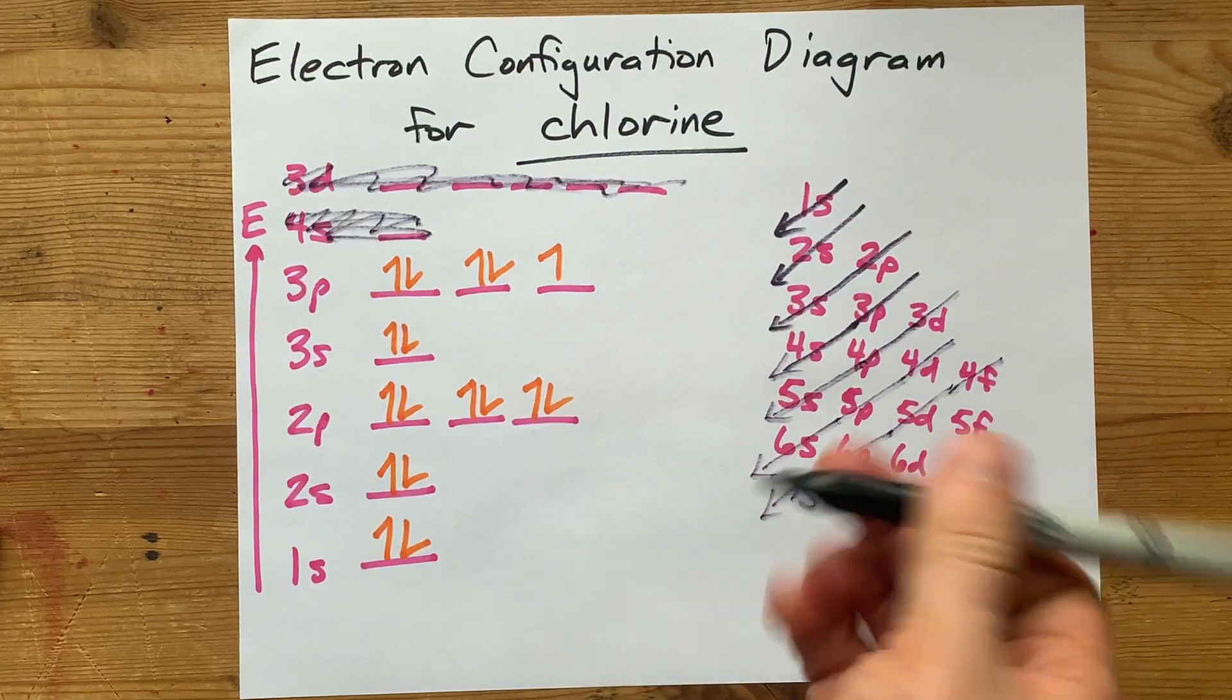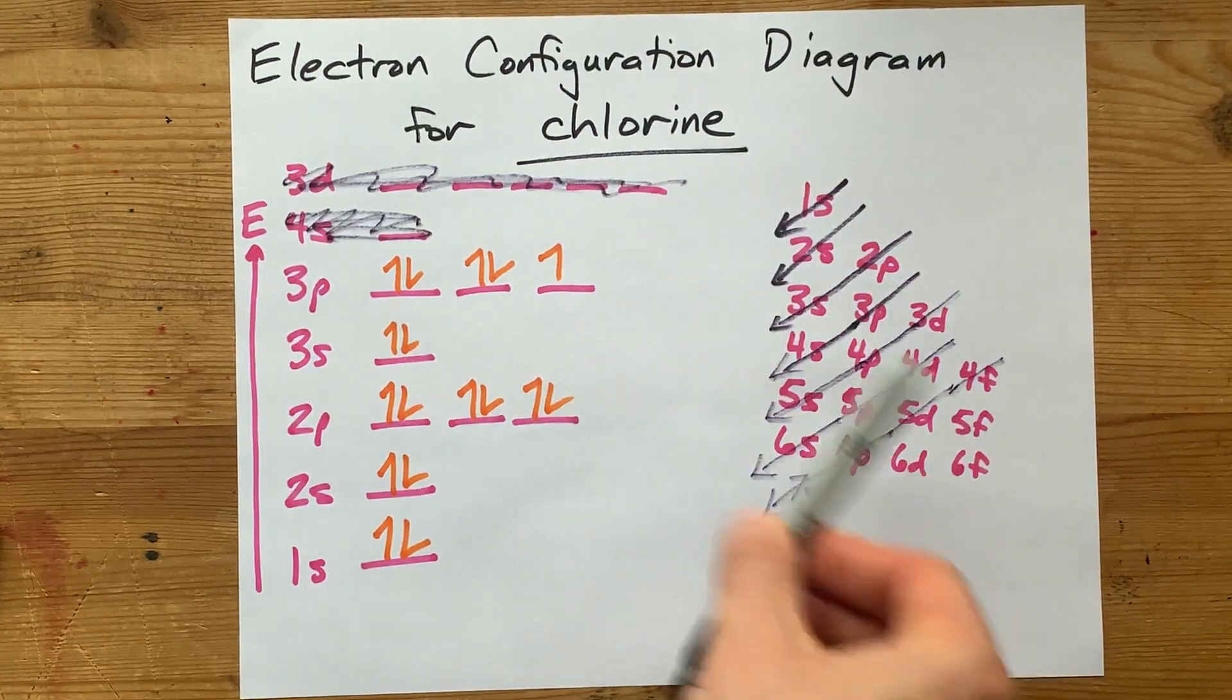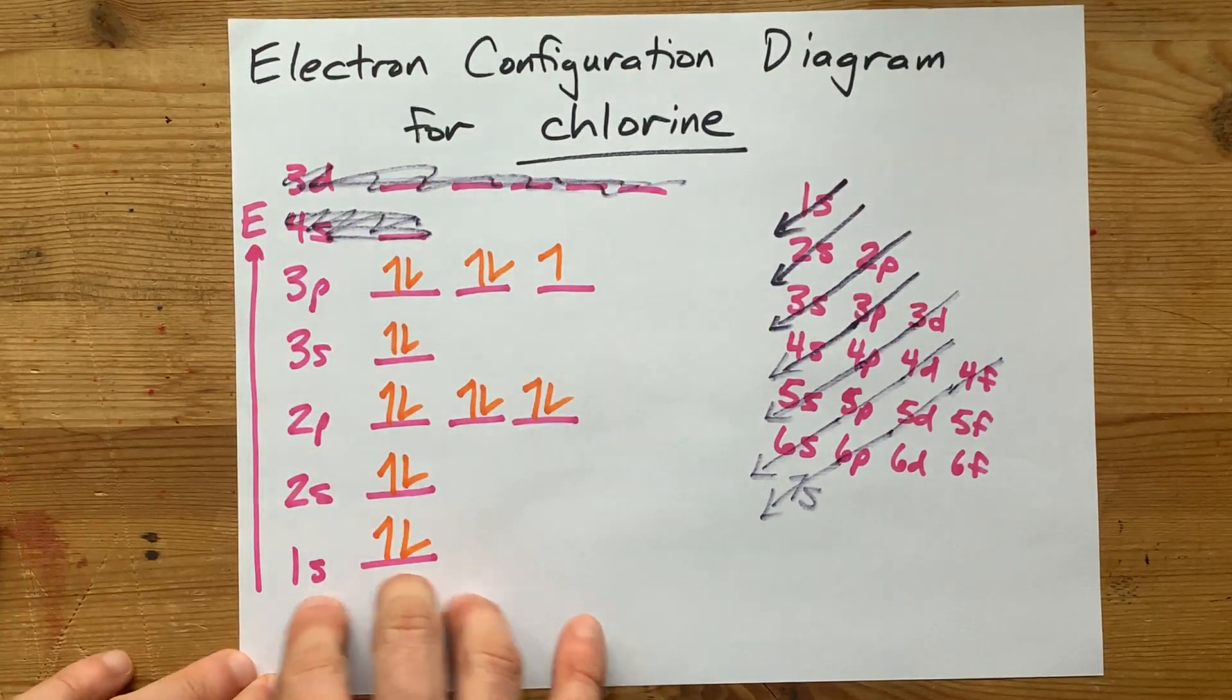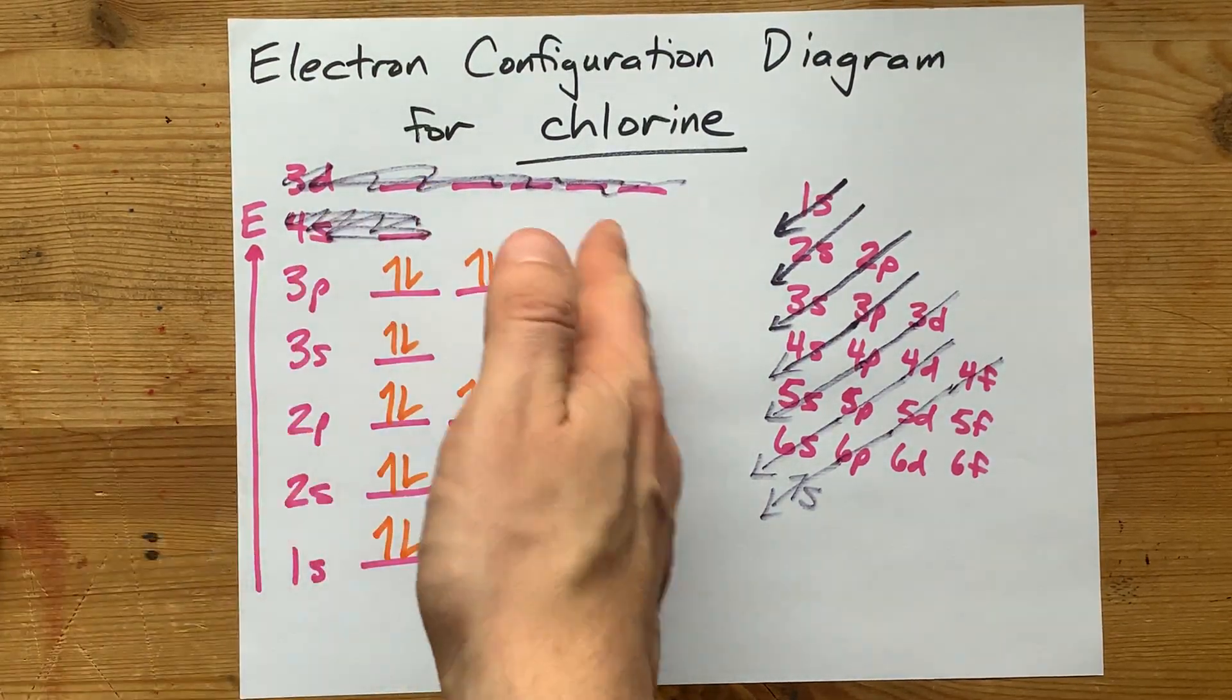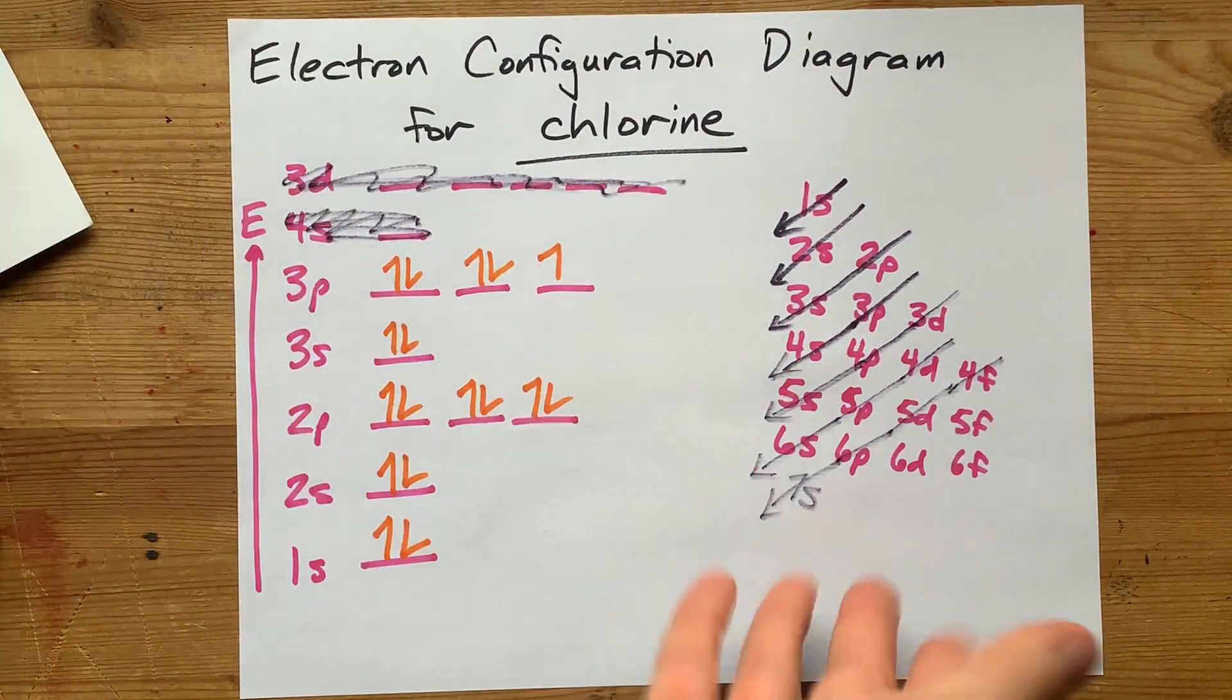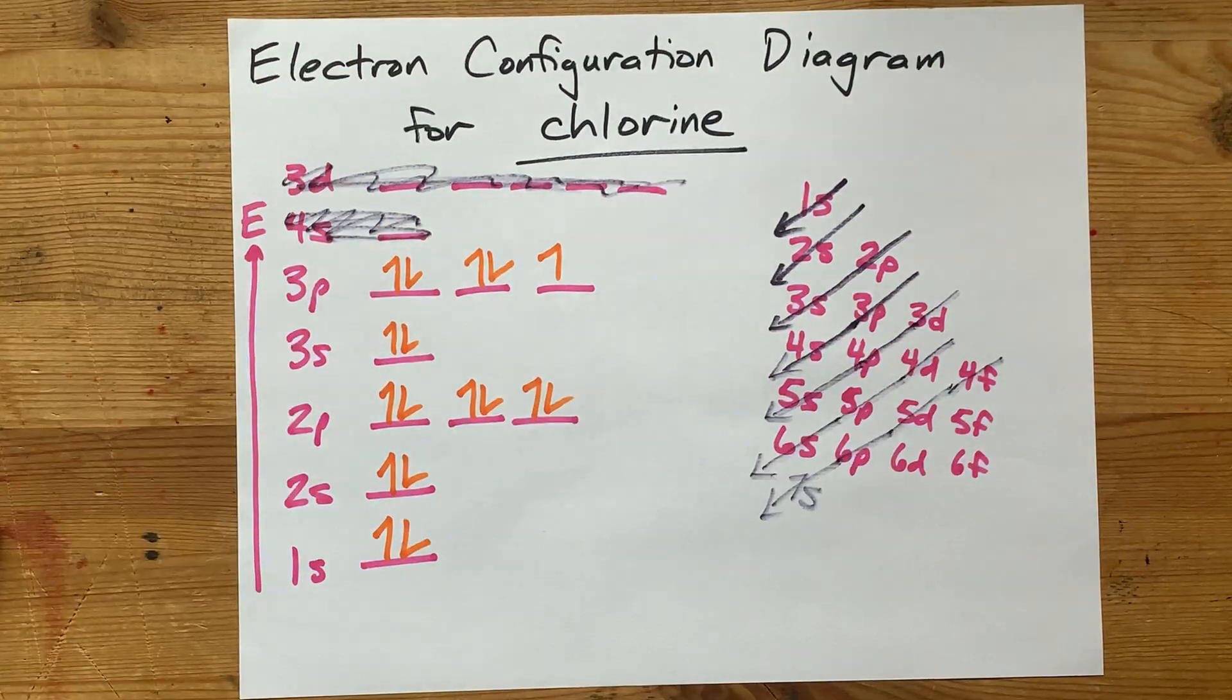This is called the order of filling. This is just like a visual way for you to figure it out for yourself. But again, you came here for the electron configuration diagram. It's always the same, and then you just fill it up with however many electrons your teacher says they want. Cool? Cool. Welcome to the party. Best of luck.